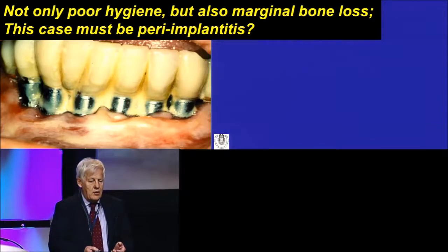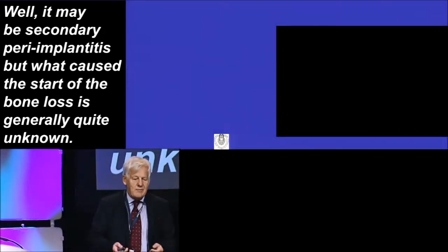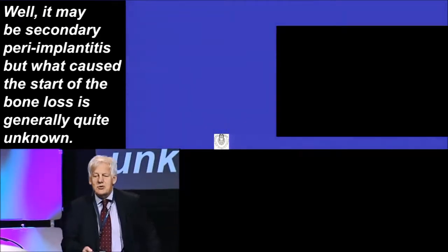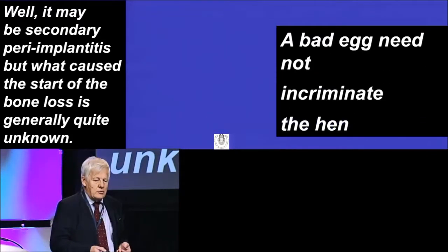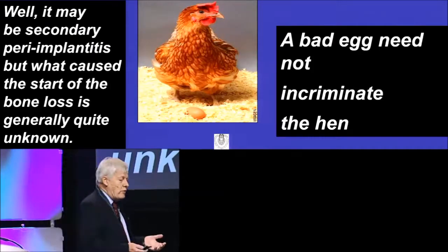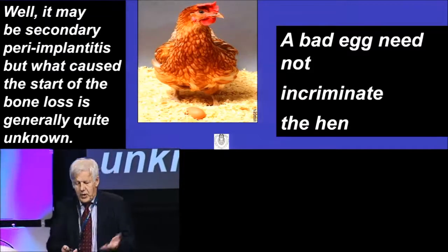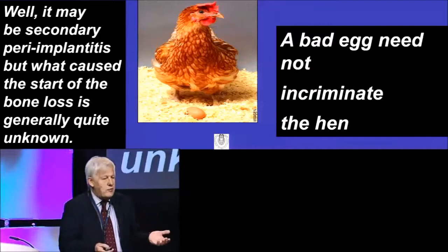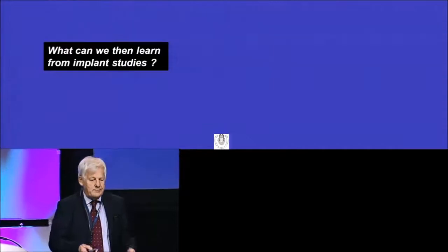Well, not necessarily. It may have developed a secondary type of peri-implantitis, but of course the start of the bone loss is generally quite unknown. And a bad egg, we usually say, would not need to incriminate the hen. We have to look at these two matters differently, because bone loss, I believe, is the start of the problem. Peri-implantitis is a late development.